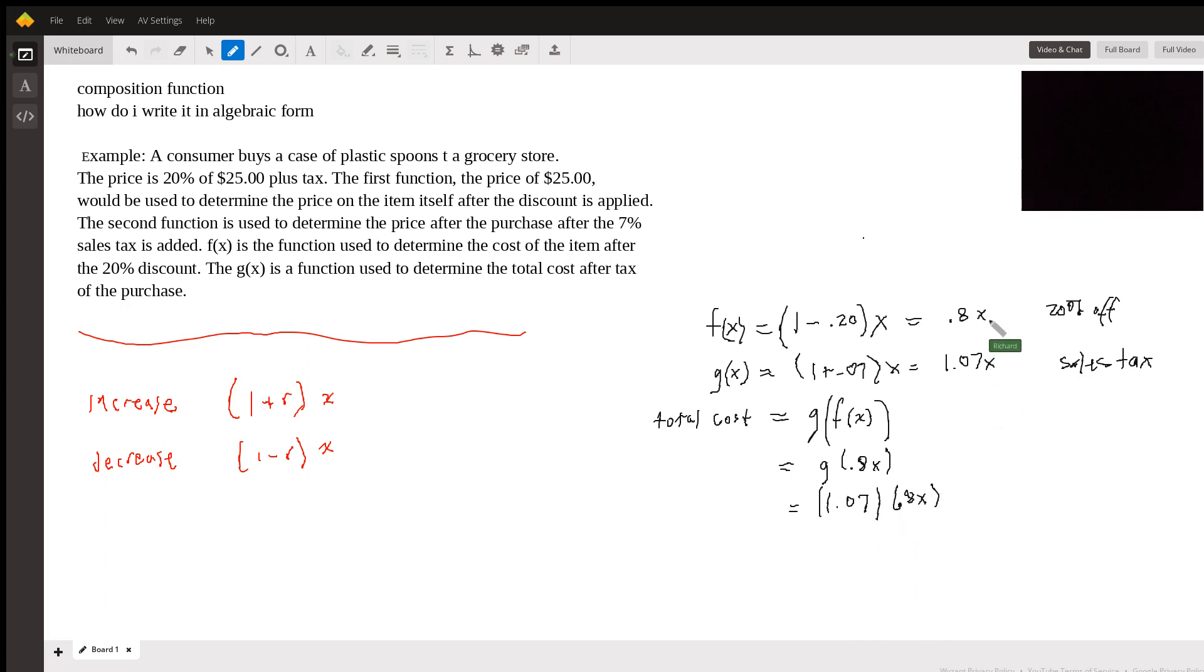And X, we're told, is $25. So in this particular case, it's 1.07 times 0.8 times 20. And I'll just go on my calculator. So 0.8 times 20 and times 1.07 is $17.12.